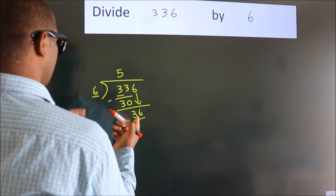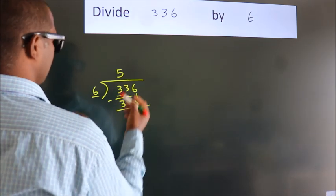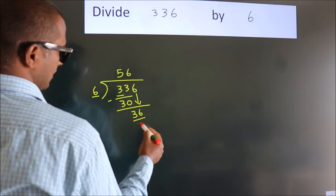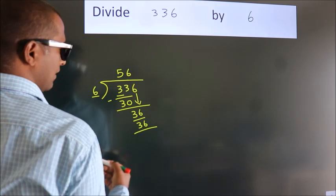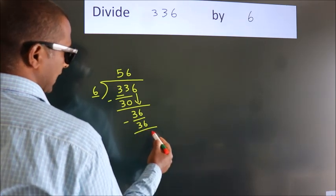When do we get 36 in the sixth table? 6 times 6 is 36. Now we subtract and get 0.